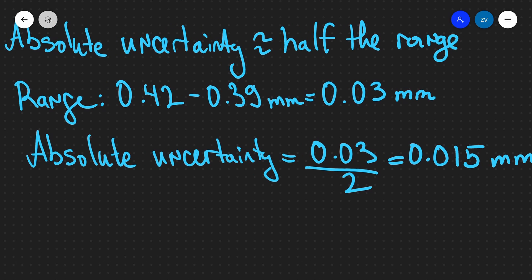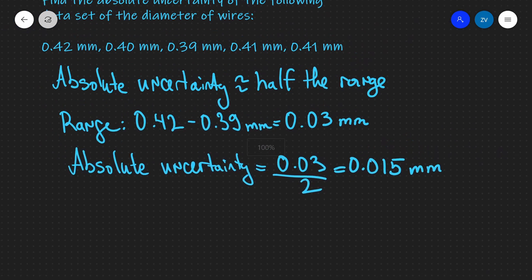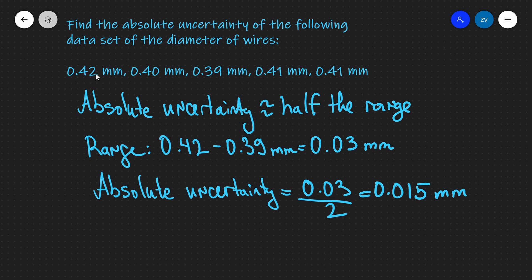This was just a quick video to recap. If you're given a data set, you can approximate your absolute uncertainty directly from that data. Your absolute uncertainty is approximately equal to half the range. The range is the difference between the highest value and the smallest value, and in this case, your range is 0.03 millimeters. You divide by 2 and you get an approximation for your absolute uncertainty of 0.015 millimeters.